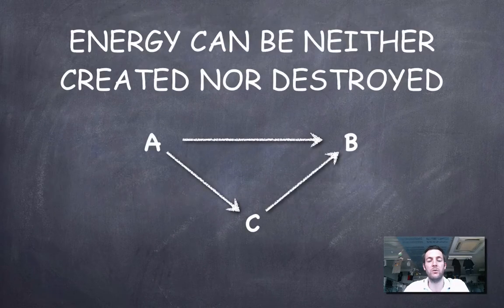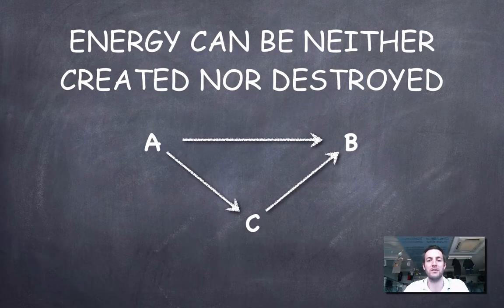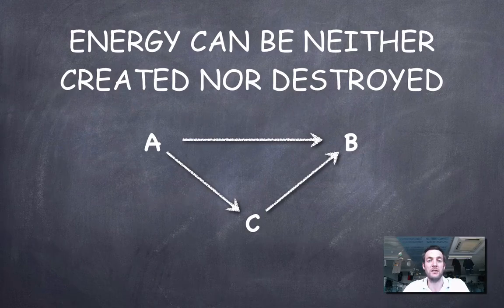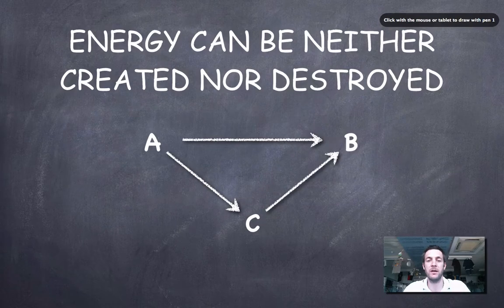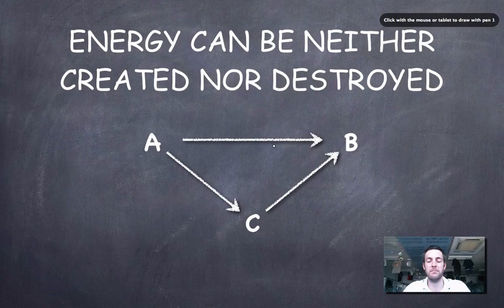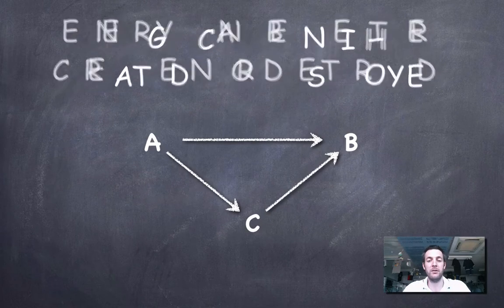Let's start off by looking at what Hess's law actually says. If you know that energy can neither be created nor destroyed, then you basically know Hess's law, because Hess's law says that the energy change for a chemical reaction is the same regardless of the route taken. This is not a law you have to quote in the IB exam, but you do need to be able to use it. It implies that going from A to B via C gives exactly the same energy change, because energy can neither be created nor destroyed.